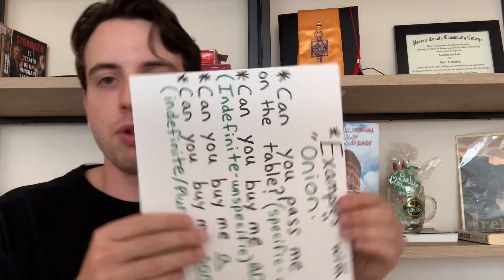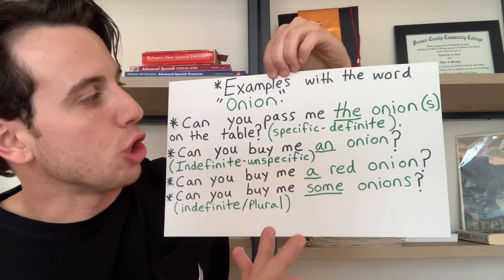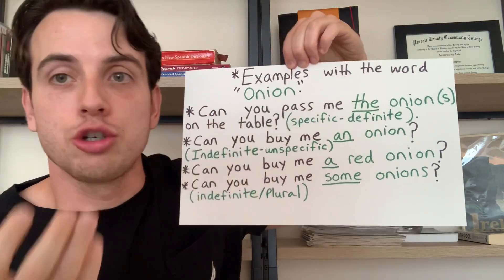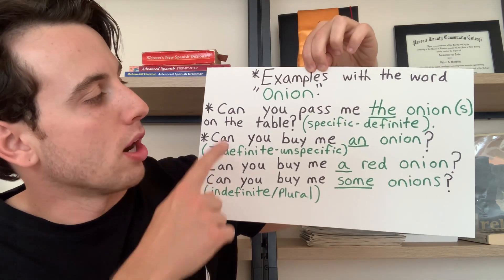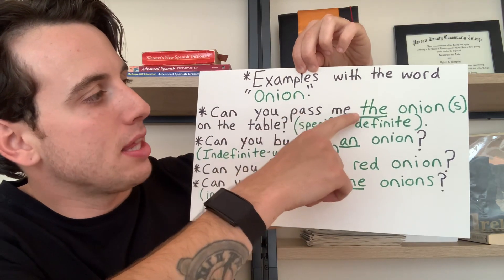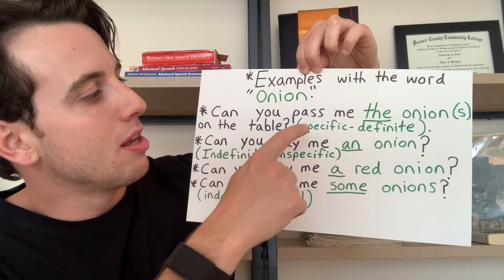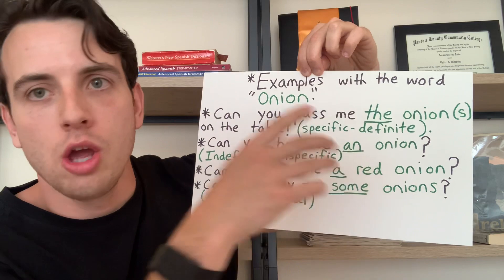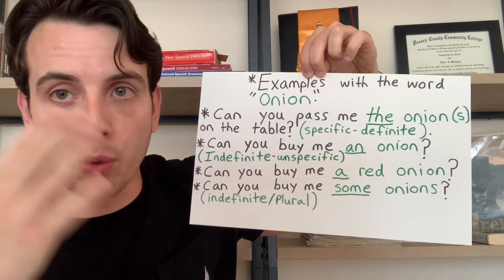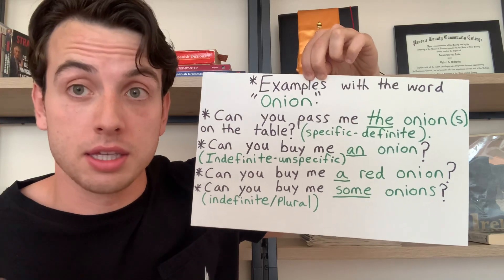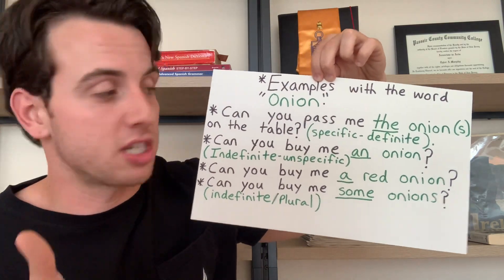For simplicity, I've made a bunch of examples using the noun 'onion' to illustrate the different rules. Can you pass me the onion, or the onions, on the table? Specific and definite — we even know the location. It's the onions on the table, so we already have in mind which onions we're speaking about. It's not in general; it's specific and definite.